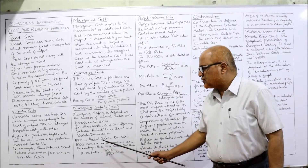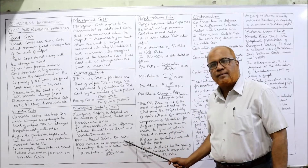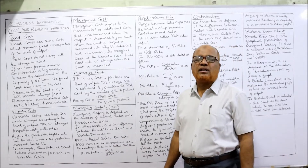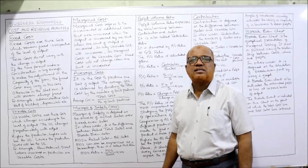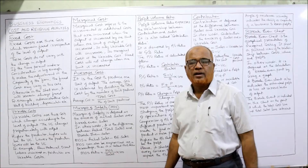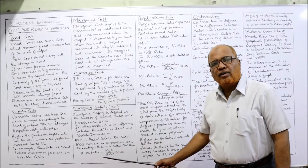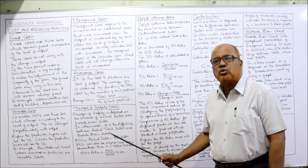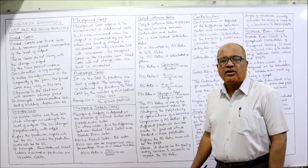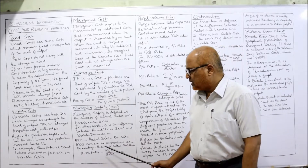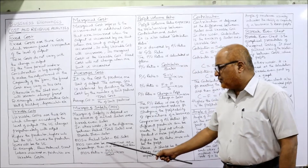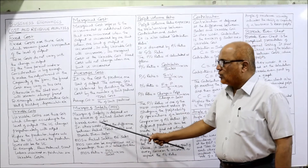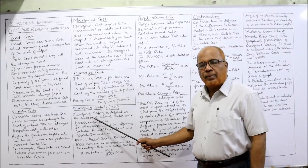The formula for margin of safety is: actual sales minus breakeven sales. Sometimes margin of safety is expressed as a percentage — in that case, divide margin of safety by sales and multiply by 100 to get the percentage of margin of safety.